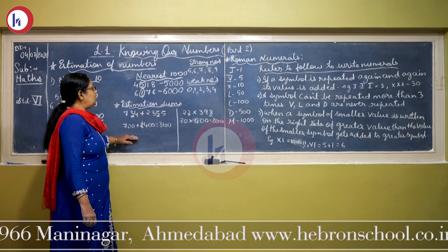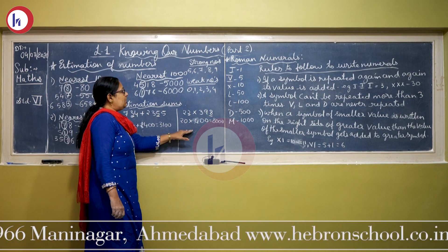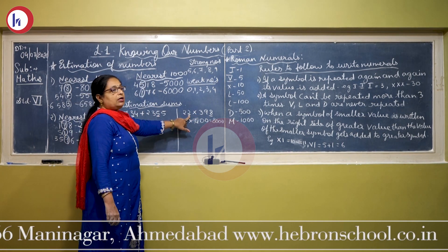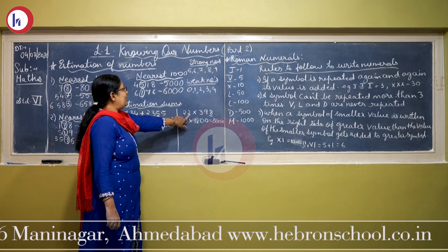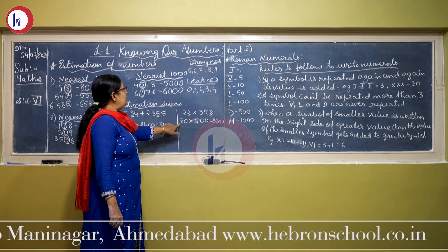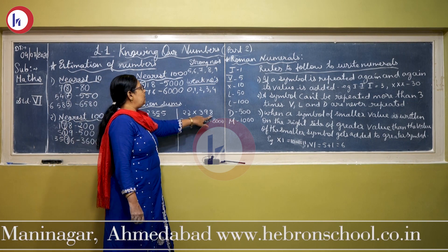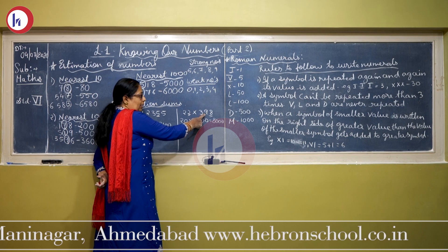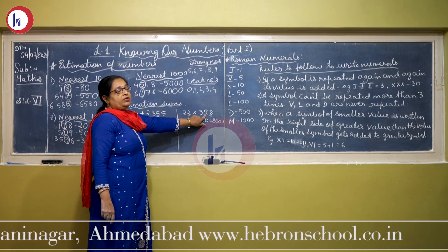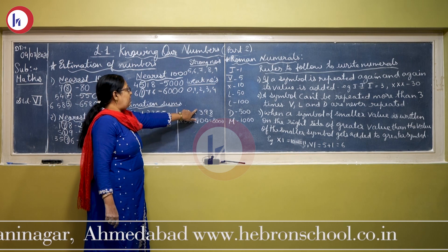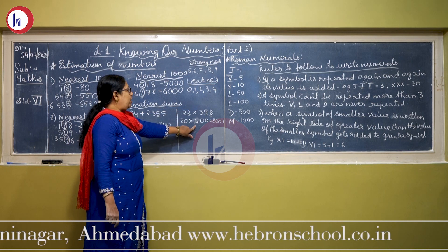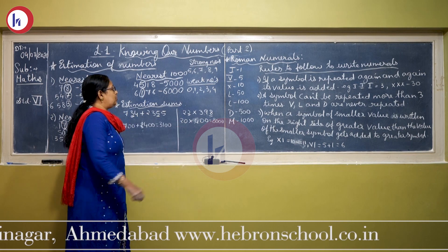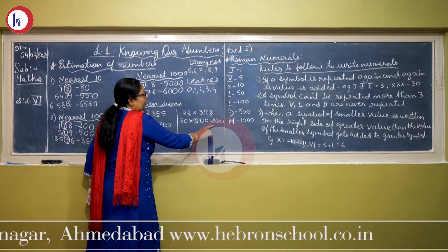Same way in multiplication. Here it is given 22 multiplied by 398. Now for 22, check the units place — it will be taken to nearest 10. Unit place is 2 — a weak number. So the value will be 20. Now for 398, 8 is in the units place — a strong number. So add 1 to 9 in the tens place; that gives 10, so 1 is carried forward, 3 becomes 4. So 398 rounds to 400. So 20 multiplied by 400 is 8000.